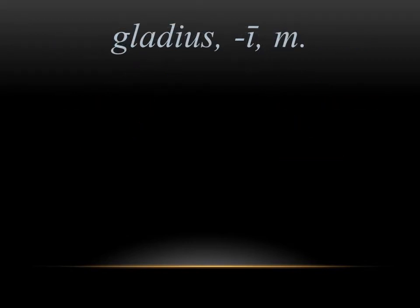The next word we have is gladius, which means sword in Latin. The English derivative we get from it is gladiator, which makes sense — a gladiator is a fighter. Think of the Colosseum, the arena. The weapon they're carrying is the gladius, which is the small short sword that the Roman legions would carry. So a gladiator is just someone who's carrying the gladius.